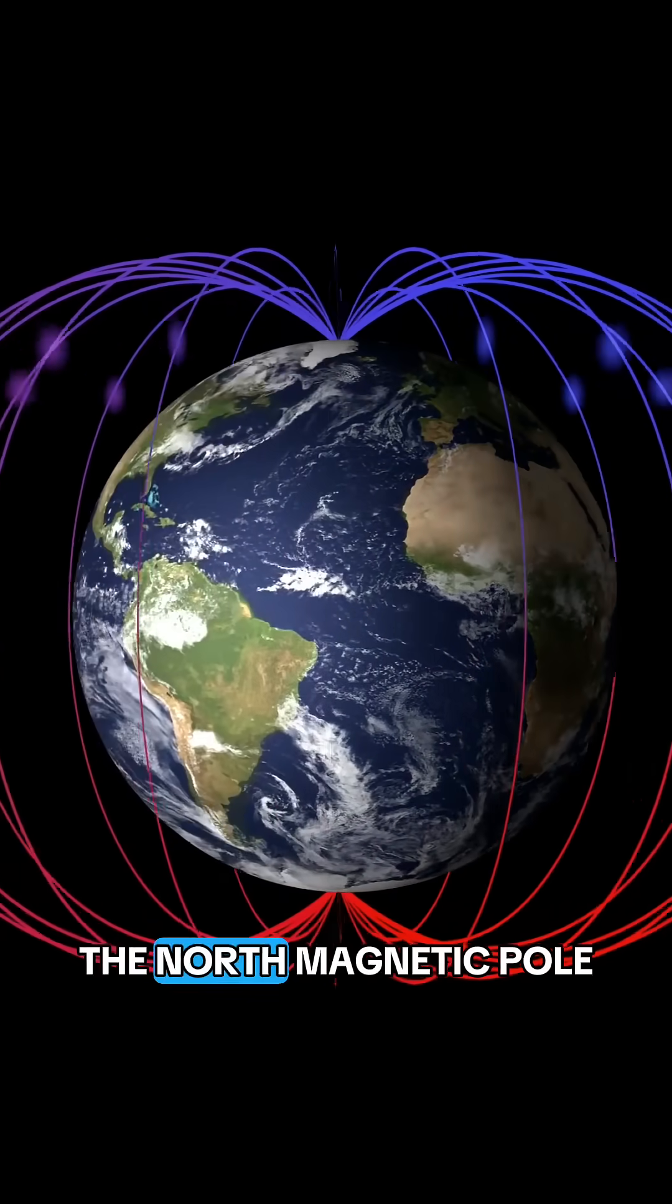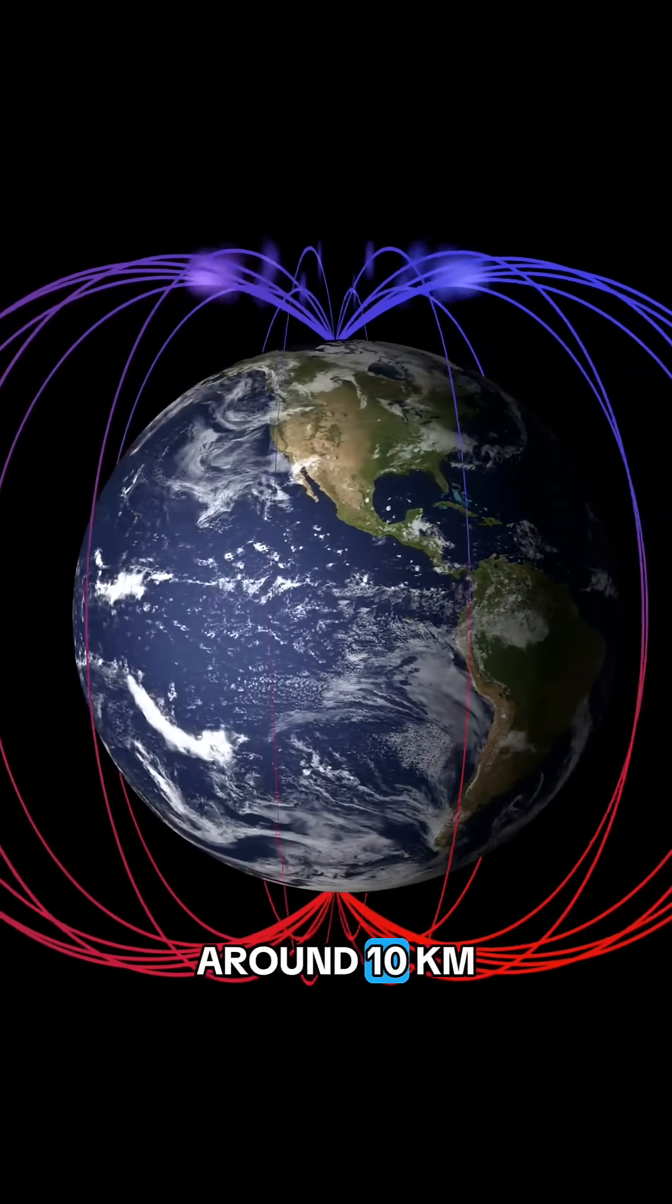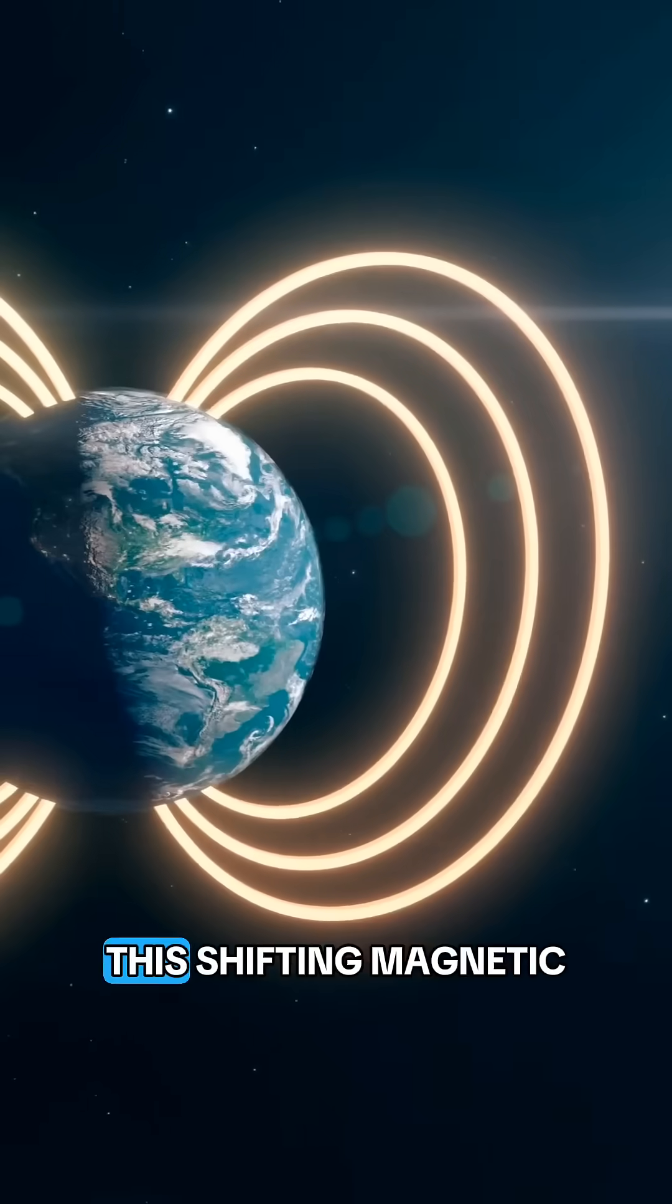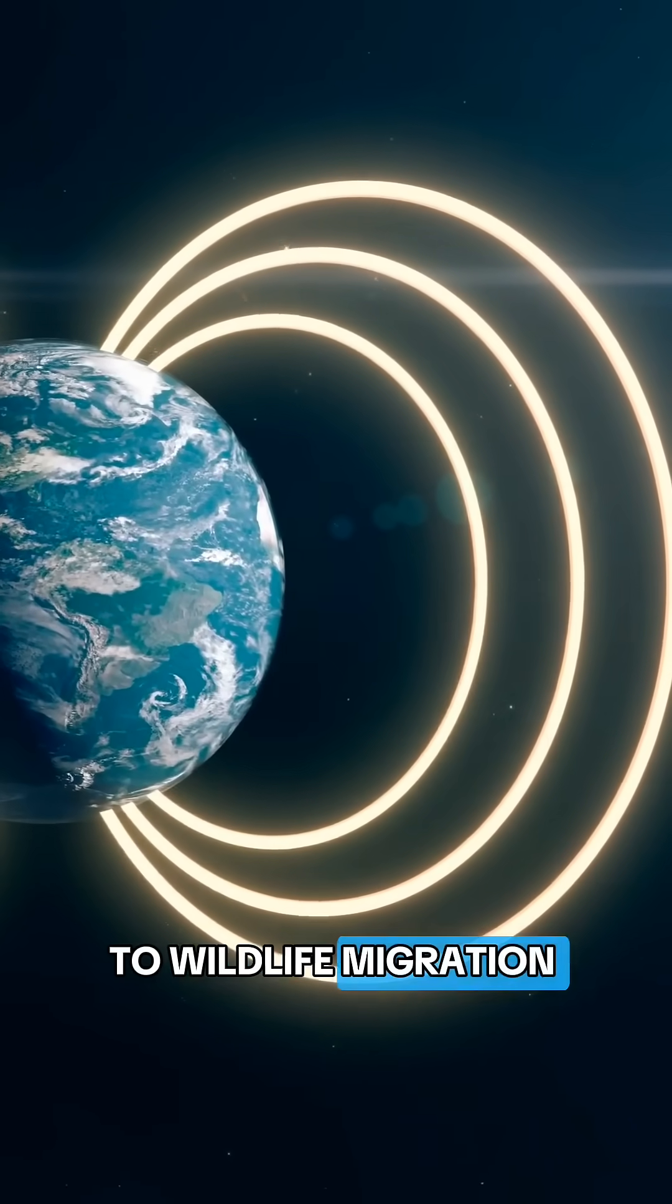Part of the mystery comes from the North Magnetic Pole constantly moving, right now drifting around 10 kilometers every year. This shifting magnetic force affects everything from aviation routes to wildlife migration.